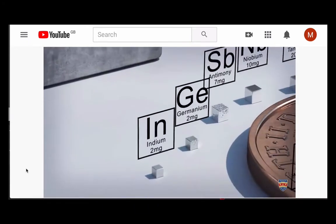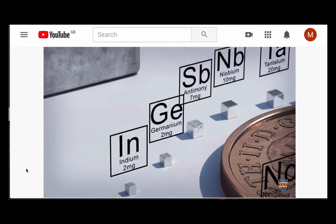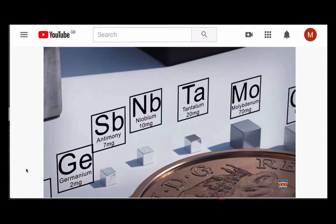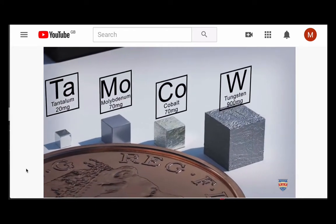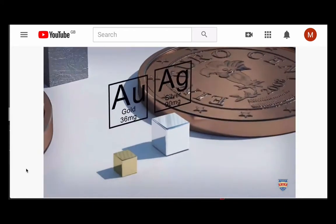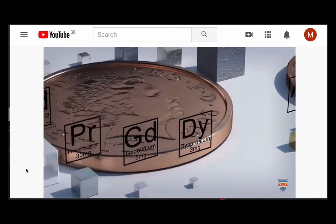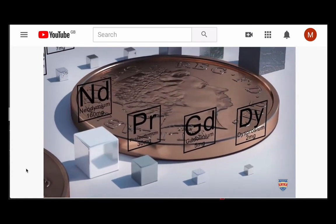If we focus in on the rare earth elements, these form cubes much, much smaller than a 1p coin, going down to indium, dysprosium, germanium, all of which are only 2 milligrams, smaller than the size of a pinhead.